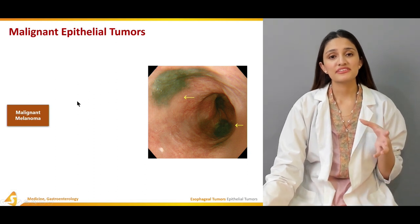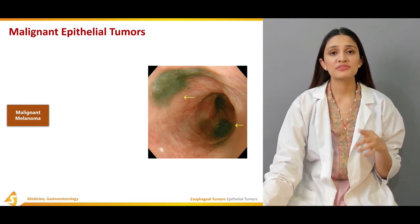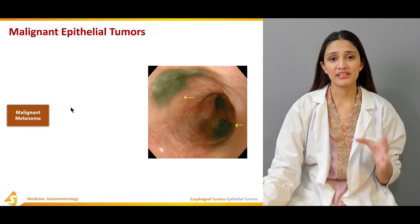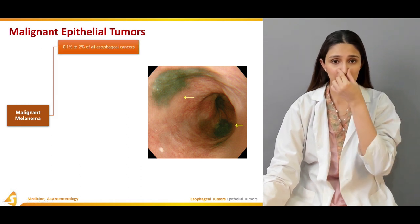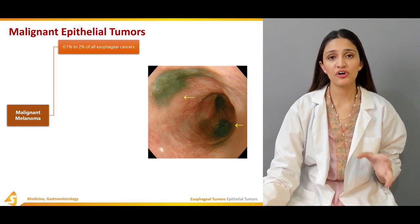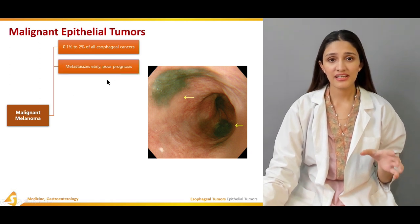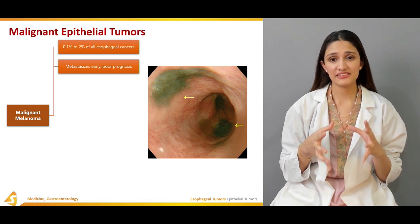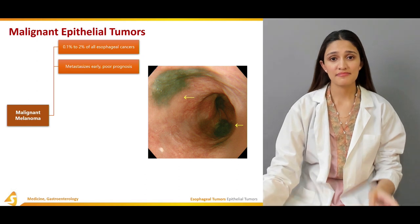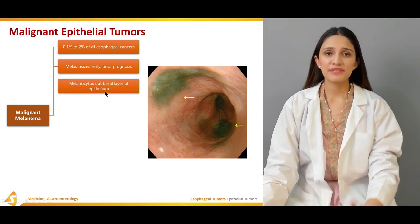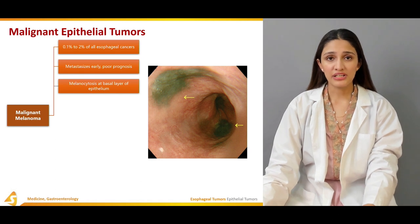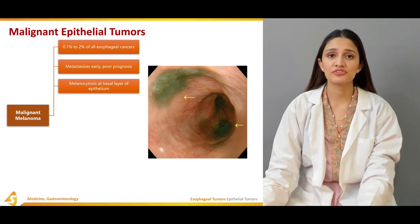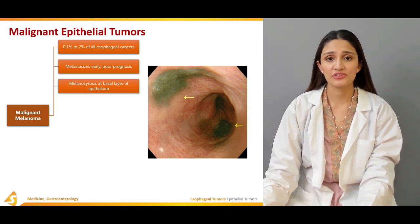Malignant melanoma is a very rare malignant epithelial tumor, accounting for around 0.1 to 2% of all esophageal cancers. This type of tumor can metastasize early and has a very poor prognosis. The melanocytes at the basal layer of the epithelium are one of the proposed reasons for its pathogenesis within the esophagus.